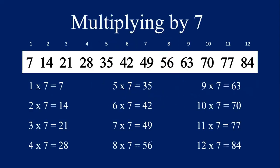Seven, fourteen, twenty-one, twenty-eight, thirty-five, forty-two, forty-nine, fifty-six, sixty-three, seventy, seventy-seven, and eighty-four.